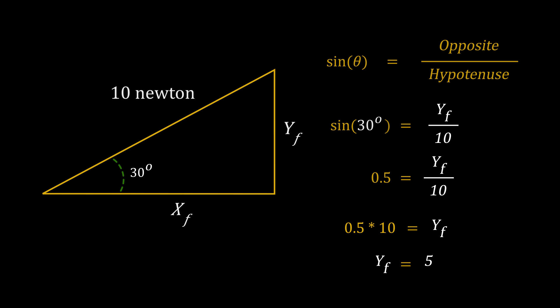Let's put that into the equation: 0.5. With easy math, you can figure out that the vertical component with 30 degrees will be 5 newtons. Similarly, xf has a different relationship and it's called cosine. Cosine is always adjacent side divided by the hypotenuse.